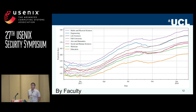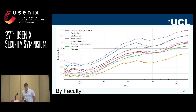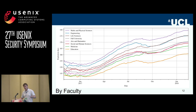We also had demographic information about users at UCL. Plotting mean password strength over time for different faculties, all faculties respond to the policy change and increase their password strength over time. There is no dramatic observable difference between groups, apart from the fact that math and physical sciences have about 1.2 times stronger passwords than the Institute of Education, which only joined UCL two years ago, so there may be other explanatory factors.